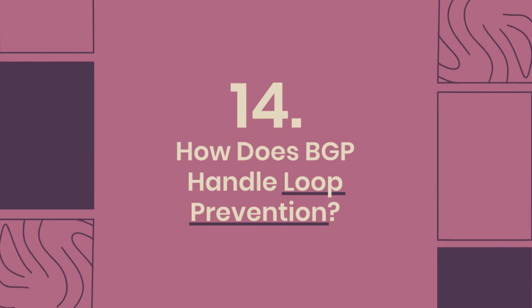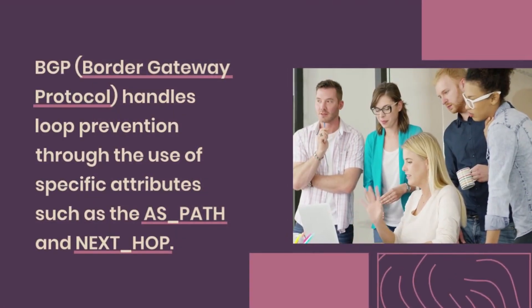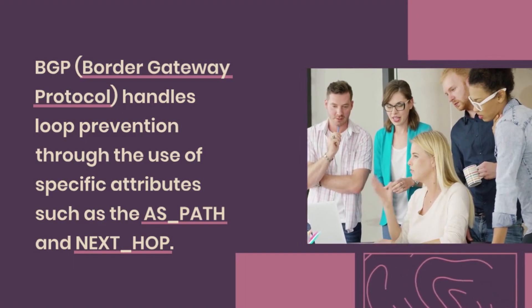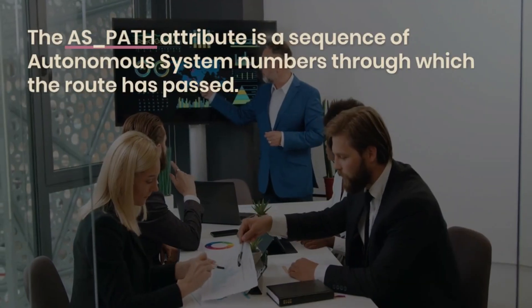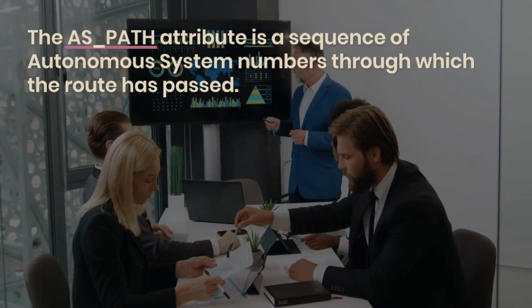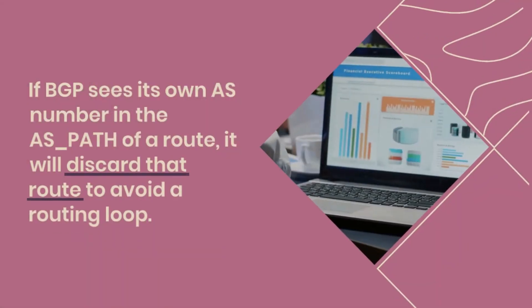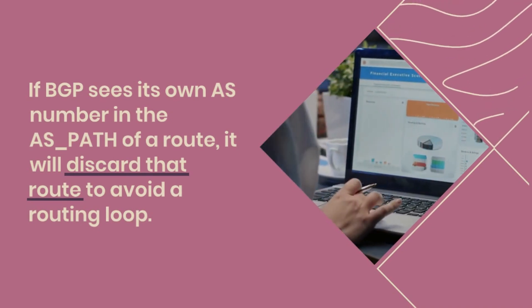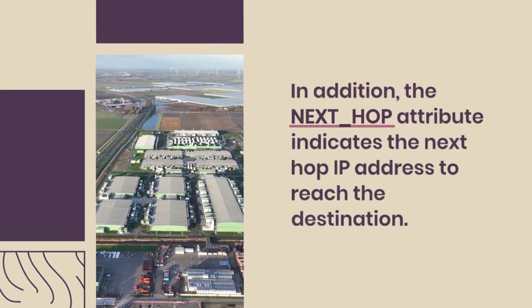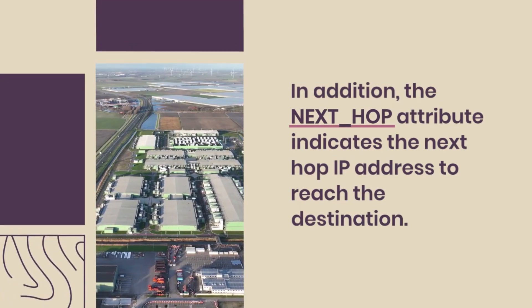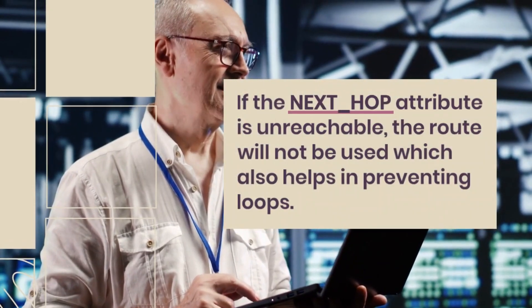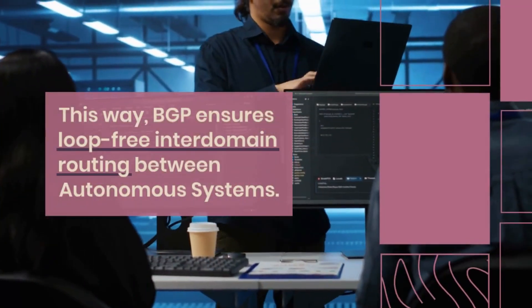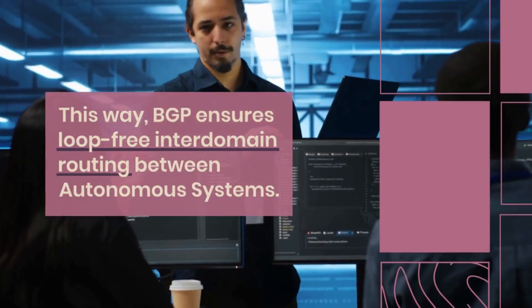How does BGP handle loop prevention? BGP handles loop prevention through the use of specific attributes such as AS_path and NEXT_HOP. The AS_path attribute is a sequence of autonomous system numbers through which the route has passed. If BGP sees its own AS number in the AS_path of a route, it discards that route to avoid a routing loop. Additionally, if the NEXT_HOP attribute is unreachable, the route will not be used, which also helps prevent loops. This ensures loop-free interdomain routing between autonomous systems.